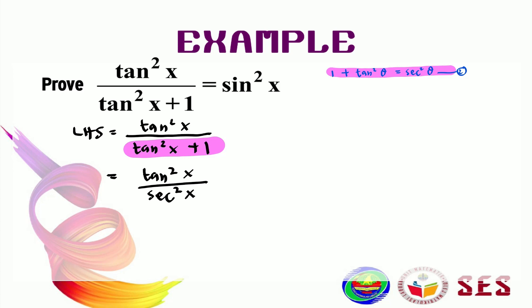Now, every time you're stuck, you can change this into sine and cos. Now, I can change this into sine x over cos x squared over 1 over cos x squared. If I put the square back inside, I'm going to get sine squared x over cos squared x over 1 over cos squared x.